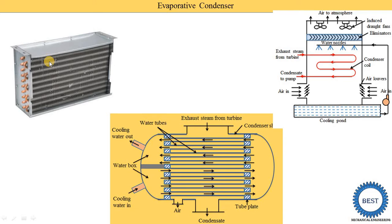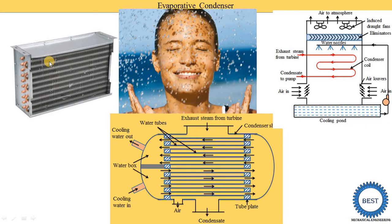For the evaporation of a substance, we need to supply some heat energy — so how is cooling produced? Here is a simple example: when sweat is on our body and we stand below a fan or move on a vehicle at high speed, we feel a greater cooling effect. This cooling is produced due to the evaporation of the sweat. The sweat on our skin starts to evaporate, converting into vapor that mixes into the atmosphere, and we feel the cooling effect. This same concept is used in the evaporative condenser.